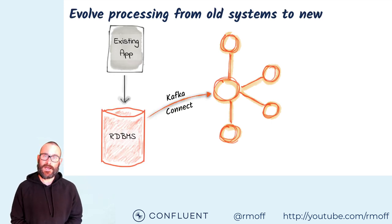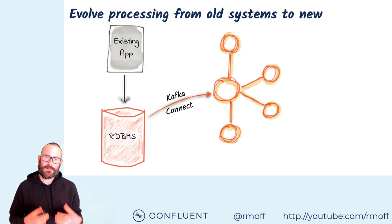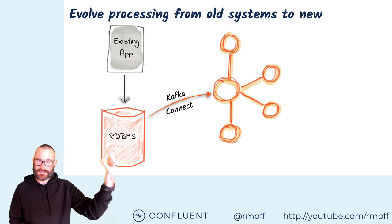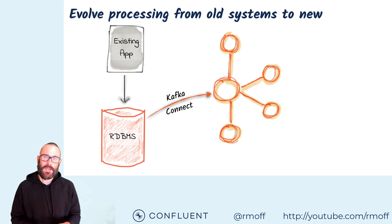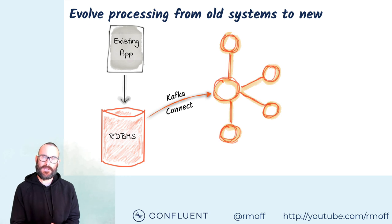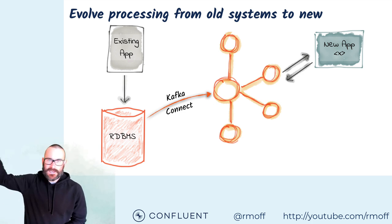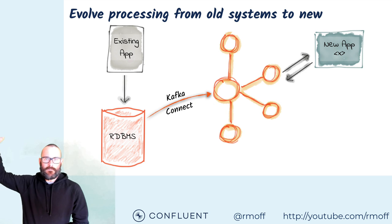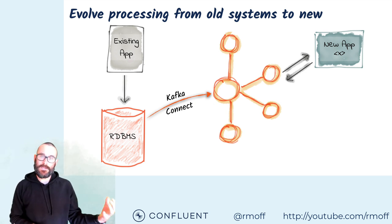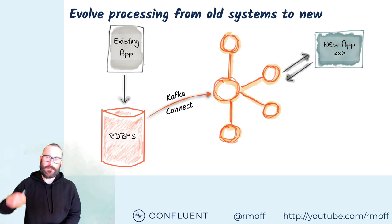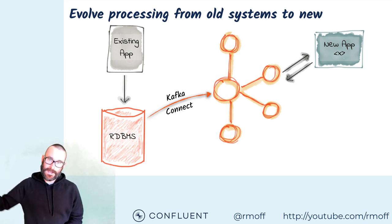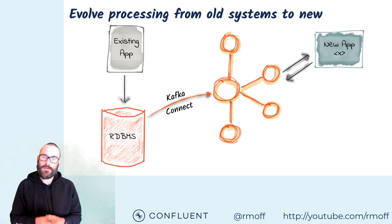Another pattern is helping us evolve existing applications towards newer ways of doing things. Our existing applications are built with databases holding the state. When it writes to a database, those are events, and we can capture those events and use them to drive new applications. In a CRM system, when someone writes a record, we can capture those through Kafka Connect into Kafka — whether a record has been created, updated, or deleted — and use it to drive applications.